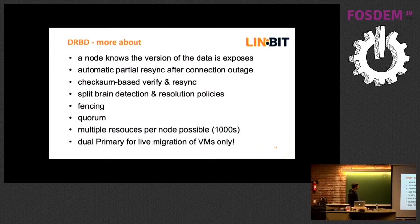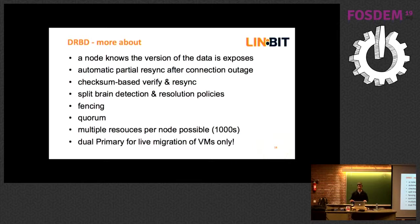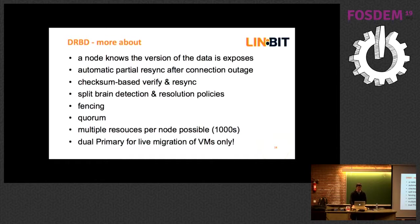We have additional features built in for clustering since most people use DRBD in high availability or cloud setups. There are mechanisms for fencing, quorum groups — all to guard against cases where a node or network fails. Split brain detection handles situations where you have two different forks of data because multiple copies were activated without seeing each other — we can recover from that even incrementally without a full resynchronization.